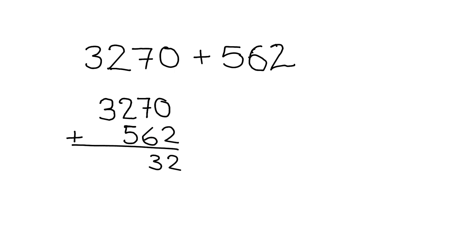So we put the 3 here and we carry the 1 over into the next column. Then we say 1 plus 2 plus 5, that gives me 8. And we say 3 and 0 gives me 3, so our answer is 3832.